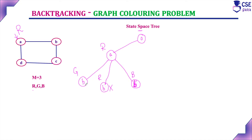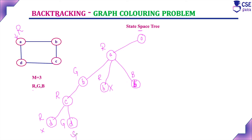With A=red and B=green, vertex C cannot be given green. Assigning red to C is possible. With C=red, vertex D cannot be red — that is a dead end. Assigning green to D is valid: this gives Solution 1 (A=red, B=green, C=red, D=green). Backtracking from D, we can also assign blue to D, giving Solution 2 (A=red, B=green, C=red, D=blue). All three color choices for D have now been checked.